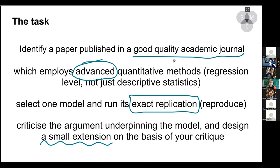The task for the module is a big task. Students have to first identify a paper — an article published in a good quality academic journal that employs advanced quantitative methods. This is basically to indicate that it can't be just descriptive statistics or basic percentages — it has to be some sort of model: linear regression, logistic regression, or multilevel model — something they could also reproduce in their own work.